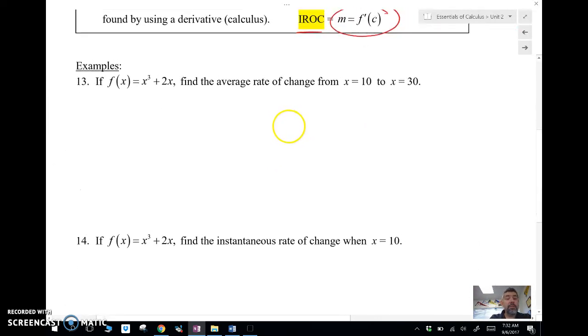So let's take a look at some examples. Here I want to find the average rate, the ARR, the average rate of change from x equals 10 to x equals 30. So we're looking at 10 comma blank and 30 comma blank. We need the y's, and we're looking for the slope between these two.